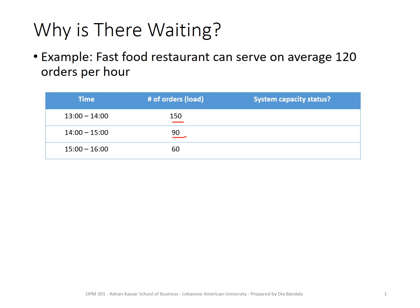Then we have 90 orders and 60 between three and four o'clock. What about the system capacity status? We need to define the system as underloaded or overloaded to describe its capacity. We have a demand of 150, and they can serve on average 120 orders per hour — that's their capacity. So capacity is less than demand, which means the system is overloaded.